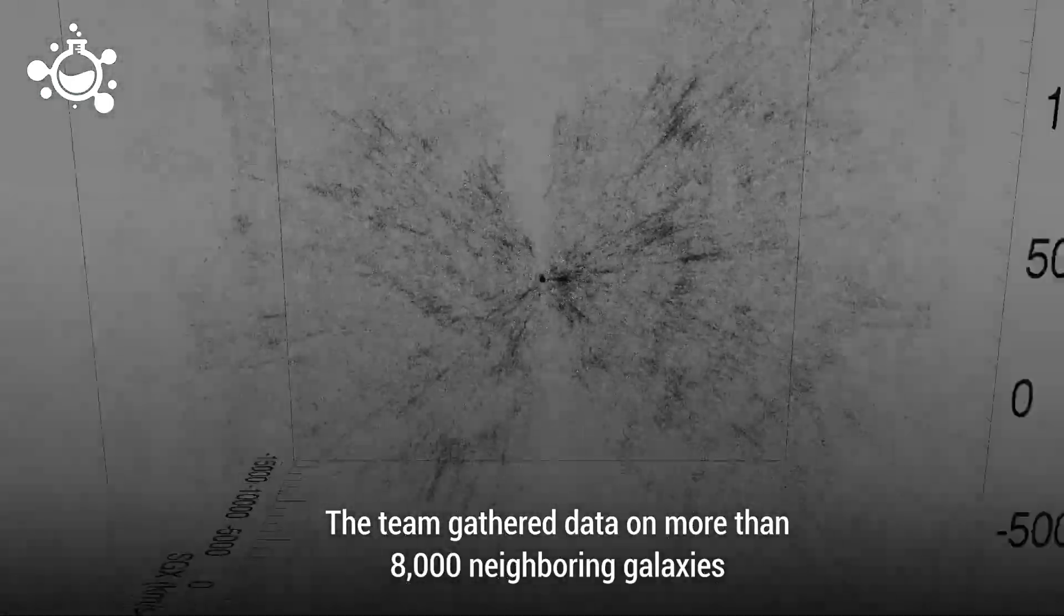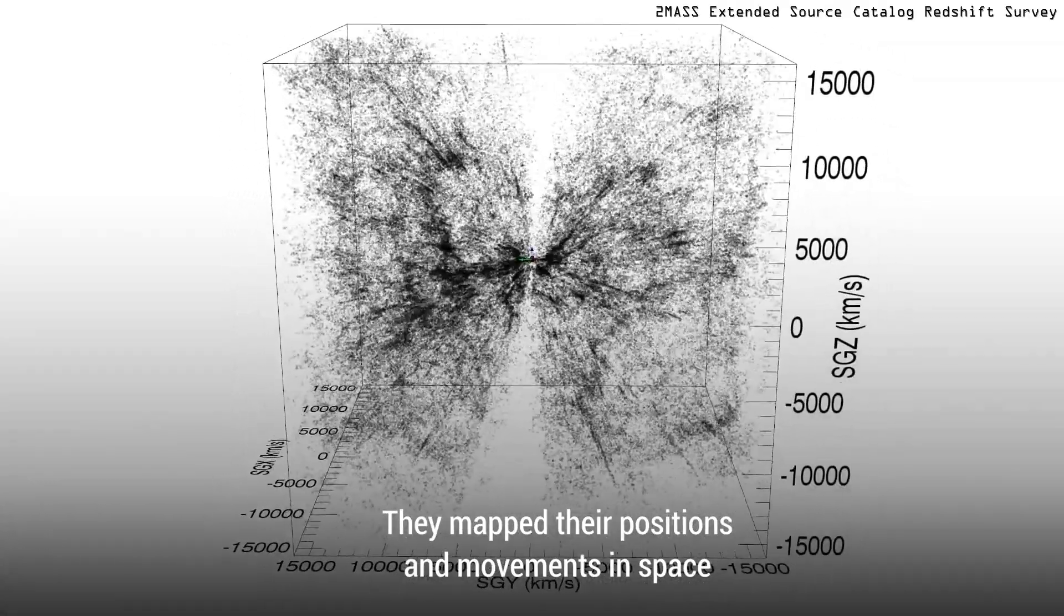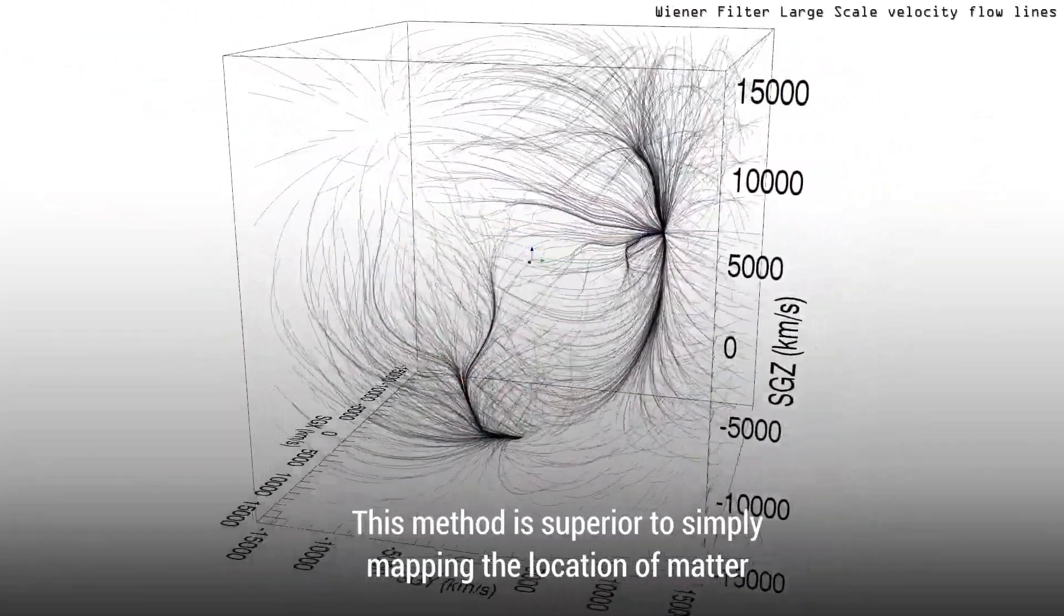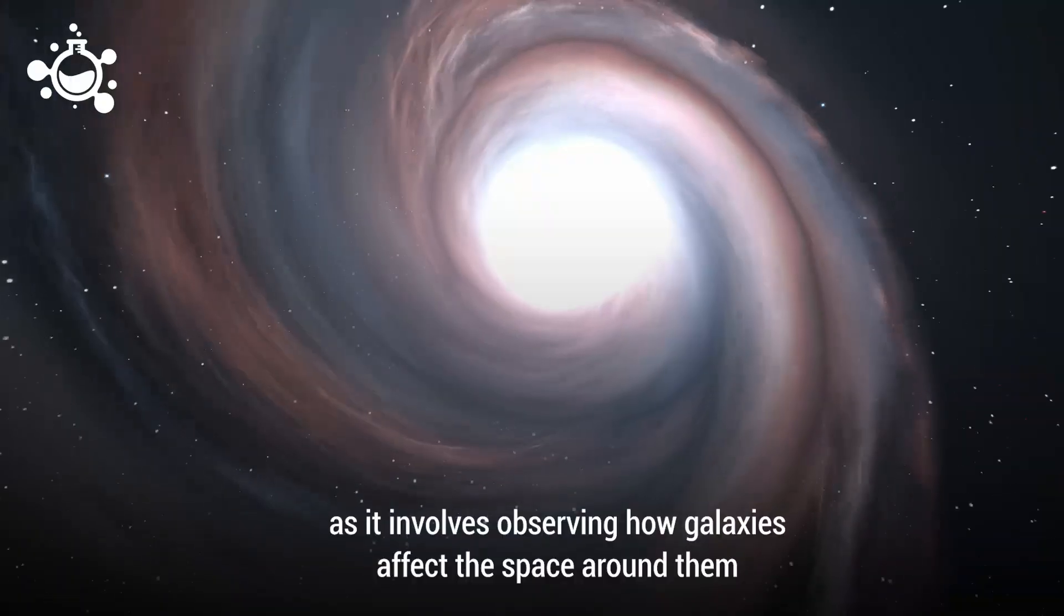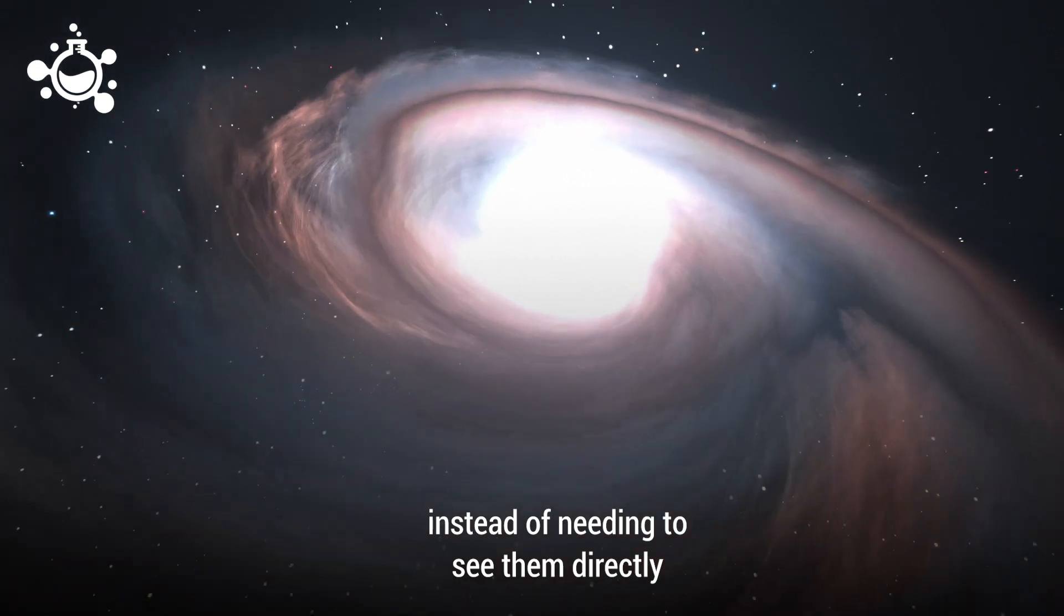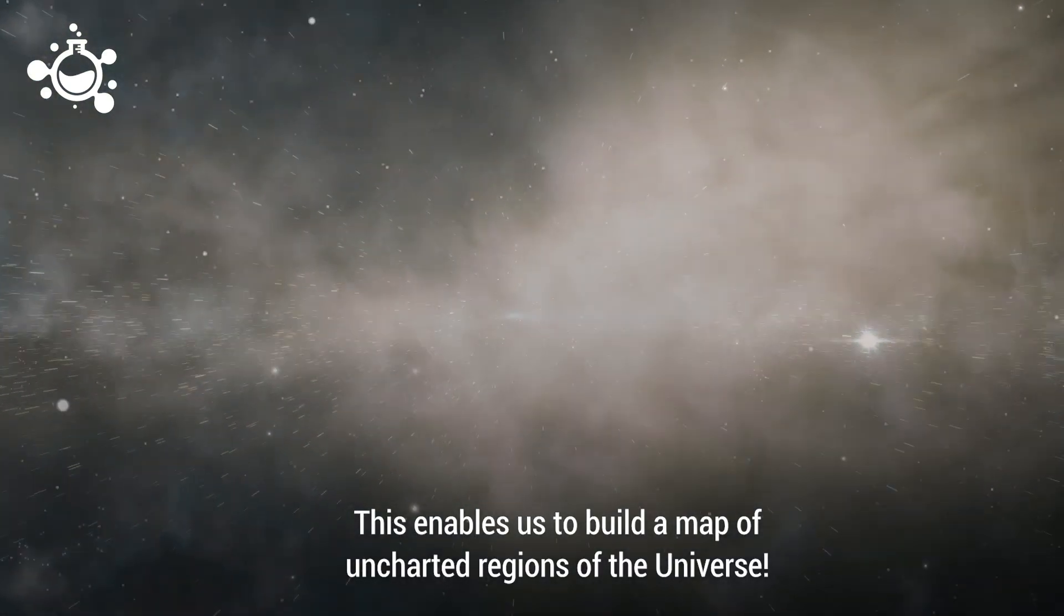The team gathered data on more than 8,000 neighboring galaxies. They mapped their positions and movements in space. This method is superior to simply mapping the location of matter, as it involves observing how galaxies affect the space around them instead of needing to see them directly. This enables us to build a map of uncharted regions of the universe.